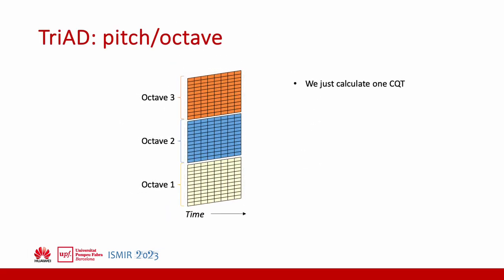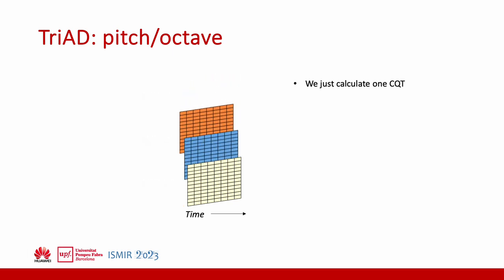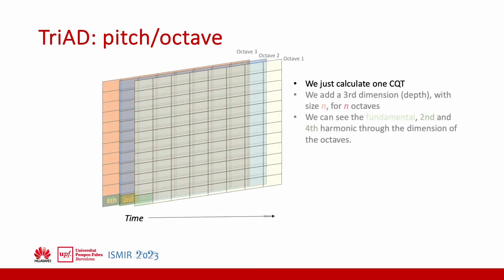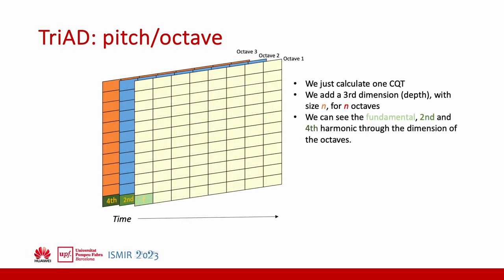The first step in our method is to split the single CQT in X octaves and then stack them together in a new dimension. We then have a three-dimensional representation of the CQT where the frequency axis has been separated into octave and pitch class information. We can see that the harmonics related to the octaves can be accessed through the octave dimension.